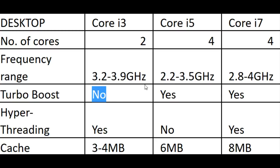The i5 and i7 may run at a lower base frequency than the i3, but with turbo boost they can reach higher speeds when needed. For example, if the Core i5 is running at 2.2 GHz and the i3 is at 3.2 GHz, and you need 3.9 GHz, the i3 is stuck at 3.2, while the i5 with turbo boost can boost up into that higher frequency range.